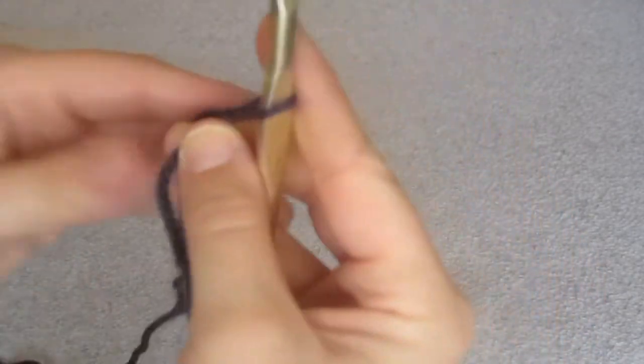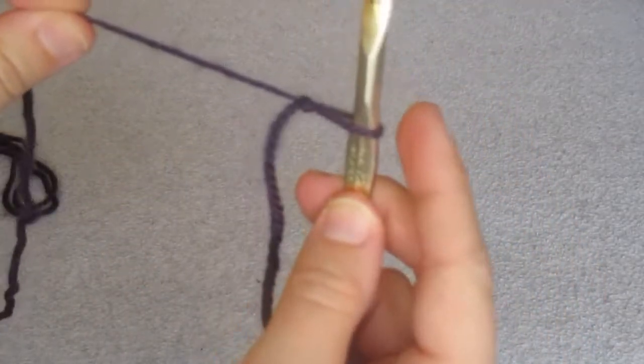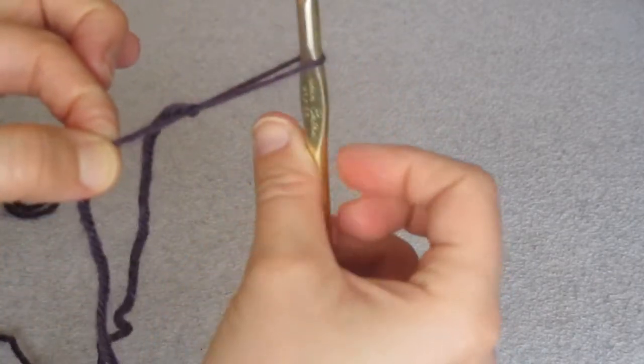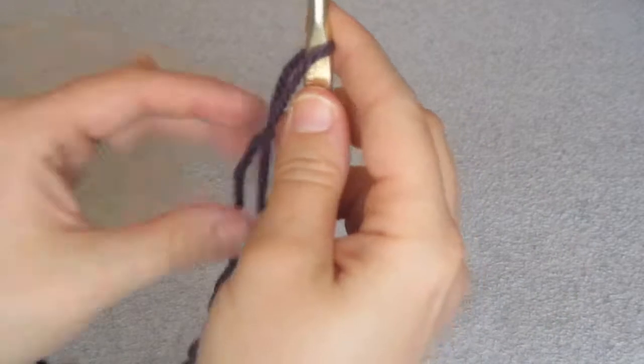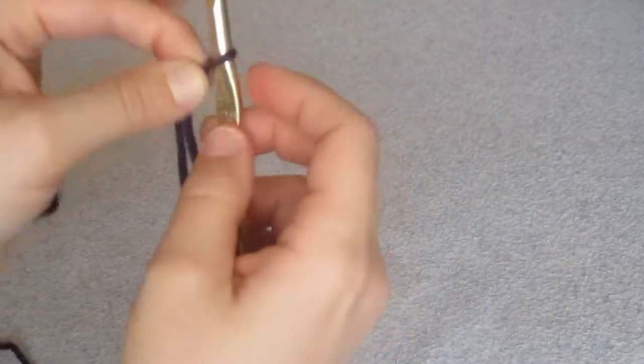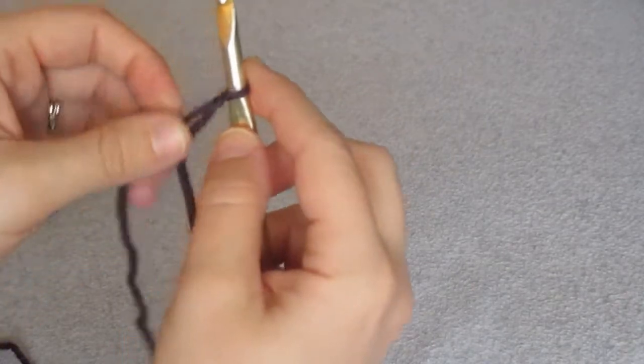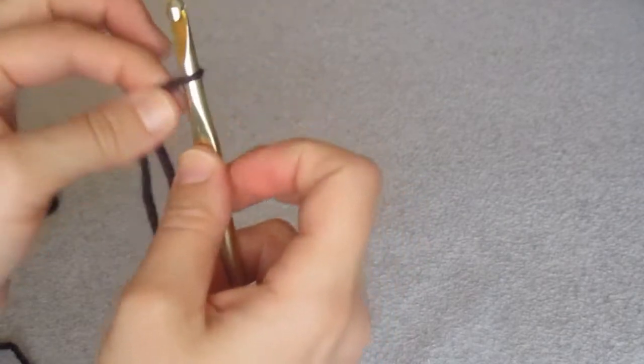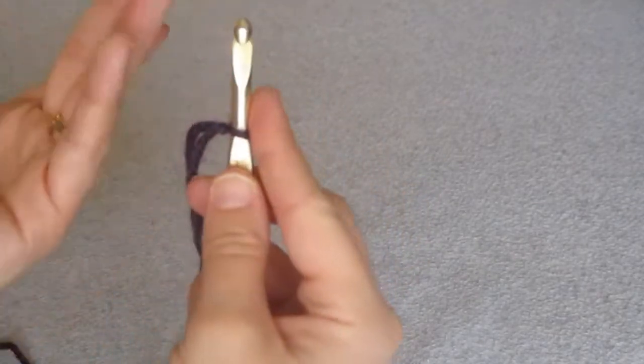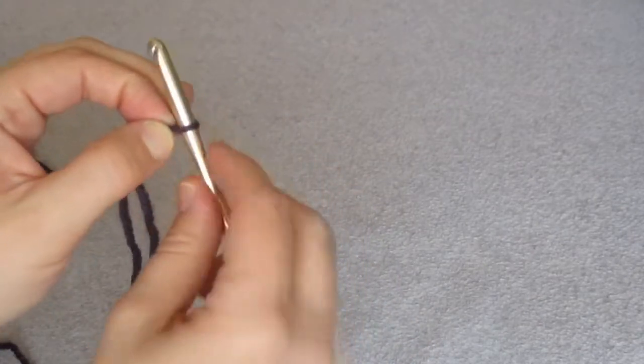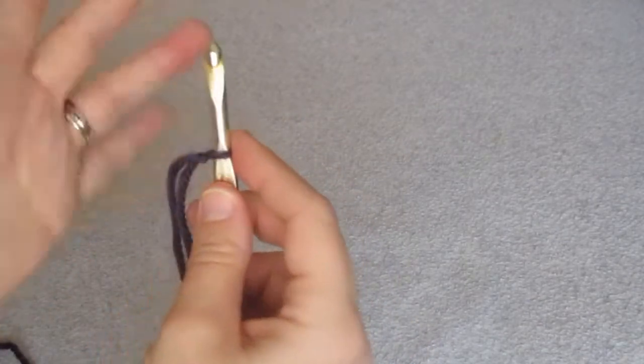Now if you want it tighter, you pull on the side that leads to the skein. If you want it looser, you pull on the side that leads to nowhere, to the end. And the reason you want to pull it tight is that if it's too loose, it'll come right off. But you don't want it too tight because if you have it too tight, then you're not going to be able to move it, and therefore you're not going to be able to pull any yarn through that slipknot. And that's the point of crocheting. You have to pull loops through.